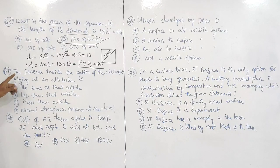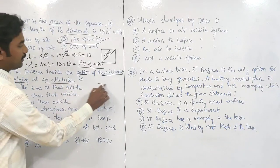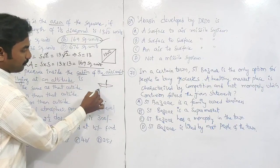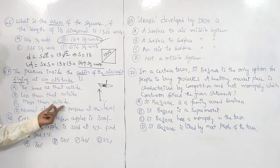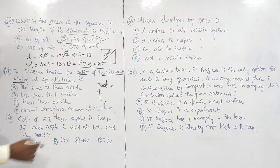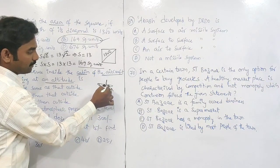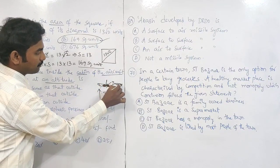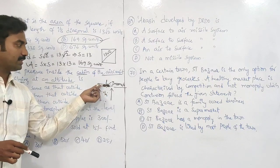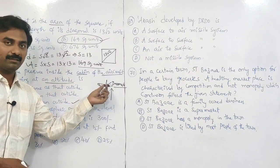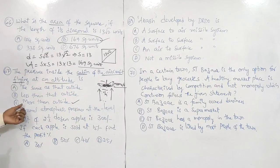Question 67: the pressure inside the cabin of an aircraft flying at an altitude. When an aircraft is flying at a height, the pressure inside the aircraft is increased — they pump air inside to maintain pressure. So inside there will be more pressure compared to outside. The answer is: more than outside.